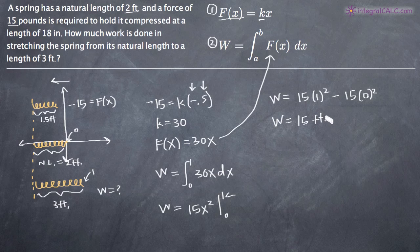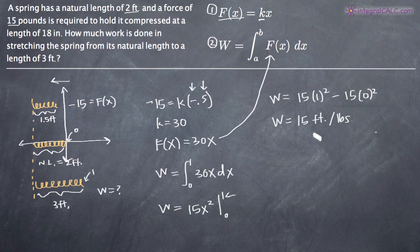So we end up with a final answer of 15 foot-pounds is the work that's required to pull the spring out or expand it from a natural length of 2 feet to an extended length of 3 feet.